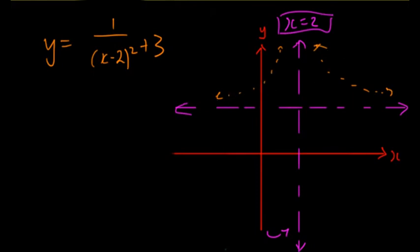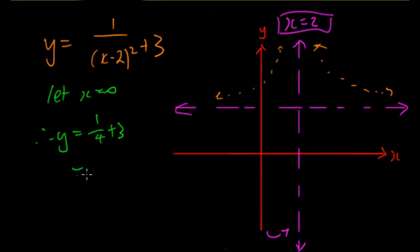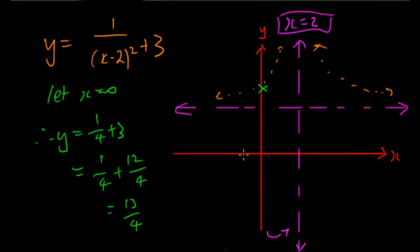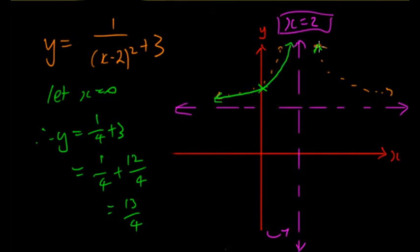To check, find the y-intercept by letting x = 0: y = 1/(0 − 2)² + 3 = 1/4 + 3 = 1/4 + 12/4 = 13/4. Checking for x-intercepts by setting y = 0 shows there are none, because the term 1/(x − 2)² is always positive, so y can never be 0 or negative. The graph is confirmed correct, and the y-intercept is labelled at (0, 13/4).